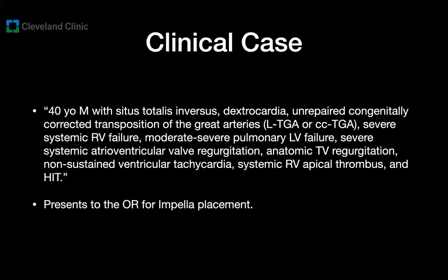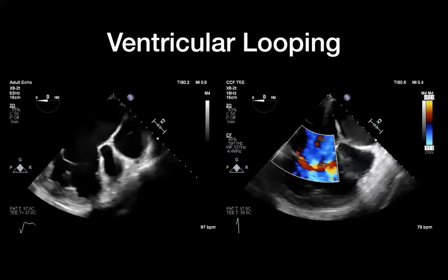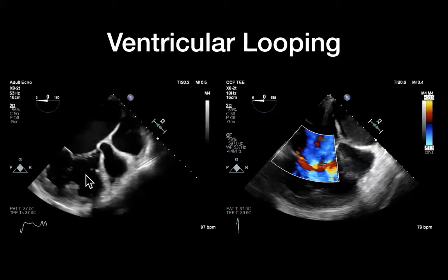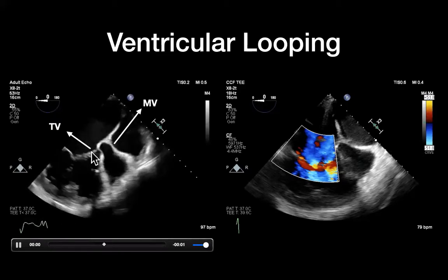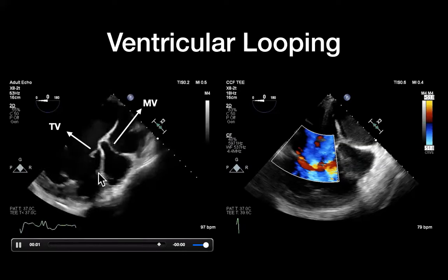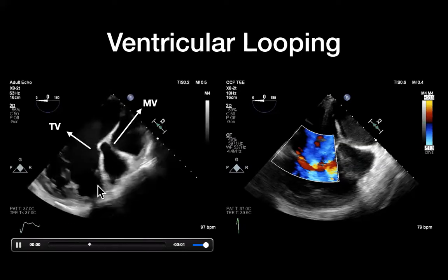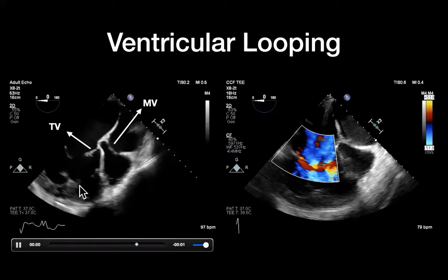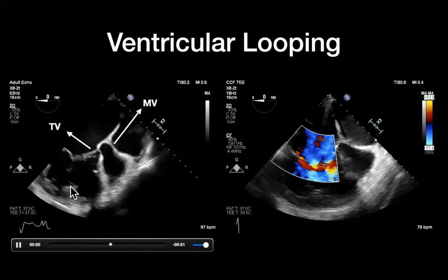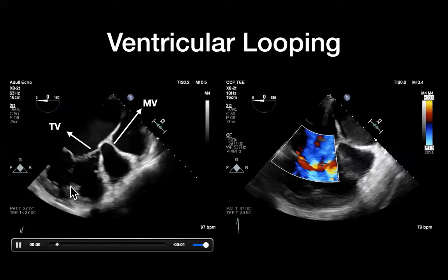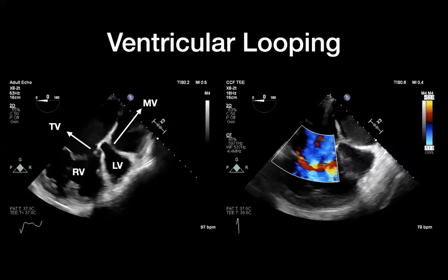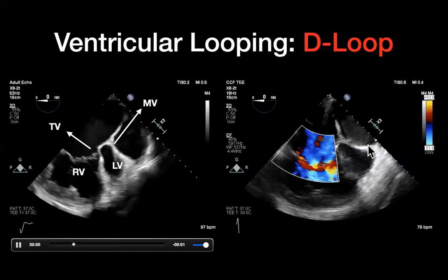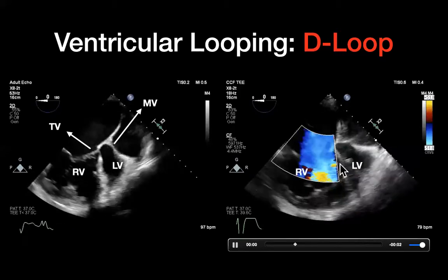Let's go back to our case and apply this concept. The clip on the left shows that one AV valve sits lower — more towards the apex — than the other, so that one must be the tricuspid valve and the other the mitral. Additionally, there appear to be chordal attachments to the septum, a moderator band, and the anterior papillary muscle of the tricuspid valve — all features of a morphologic right ventricle, which is located on the right side of the patient due to D-looping. The clip on the right shows that the jet of regurgitation corresponds to tricuspid regurgitation because this is the right ventricle.